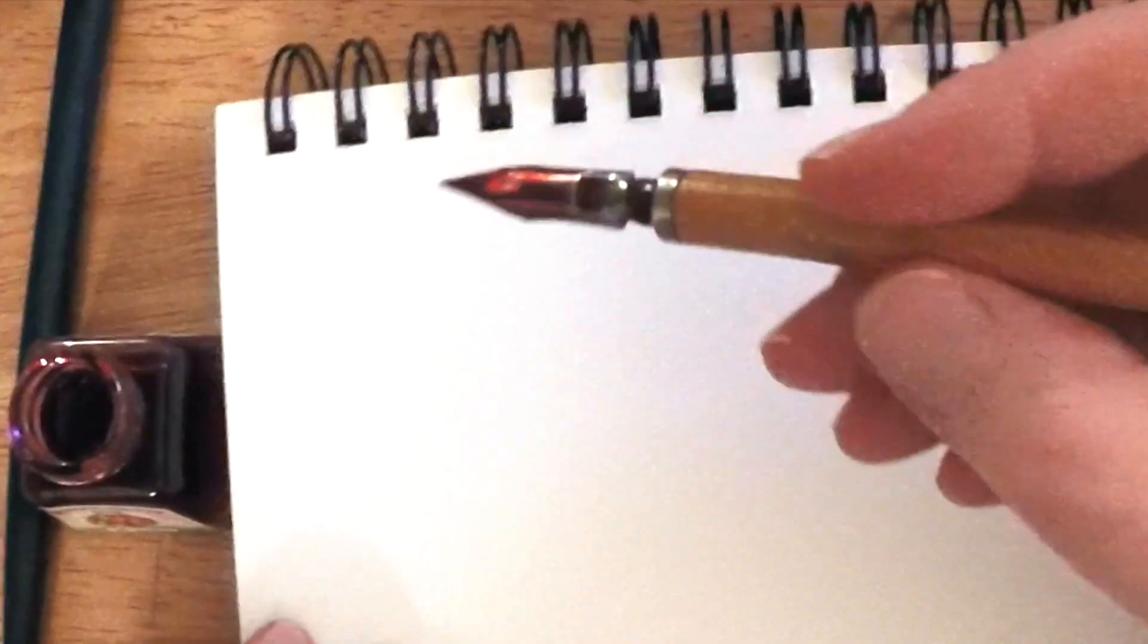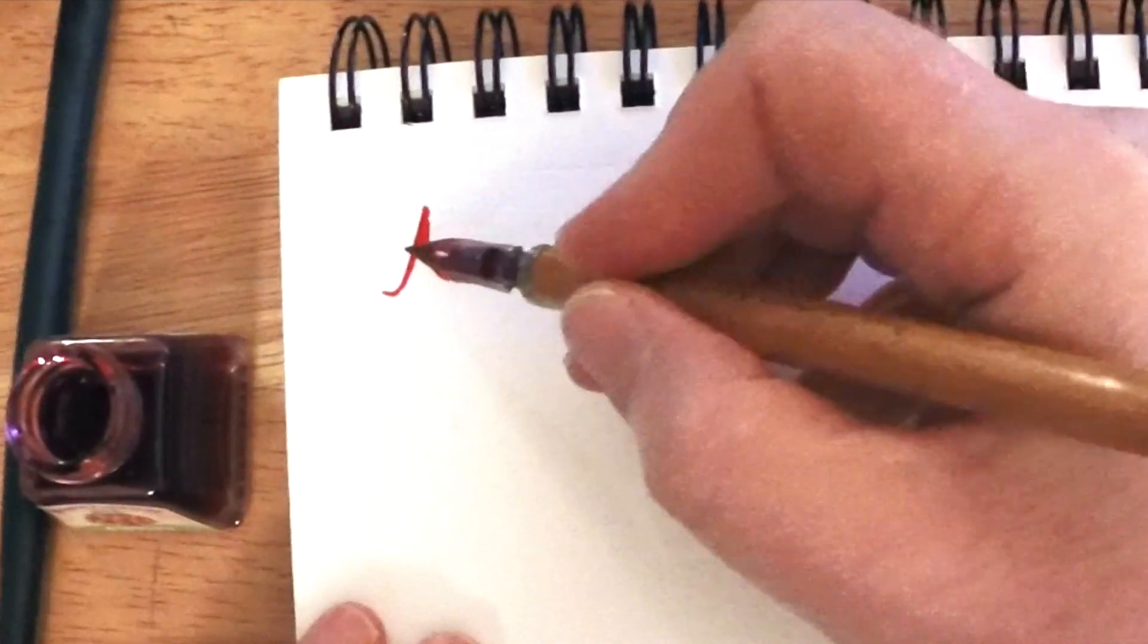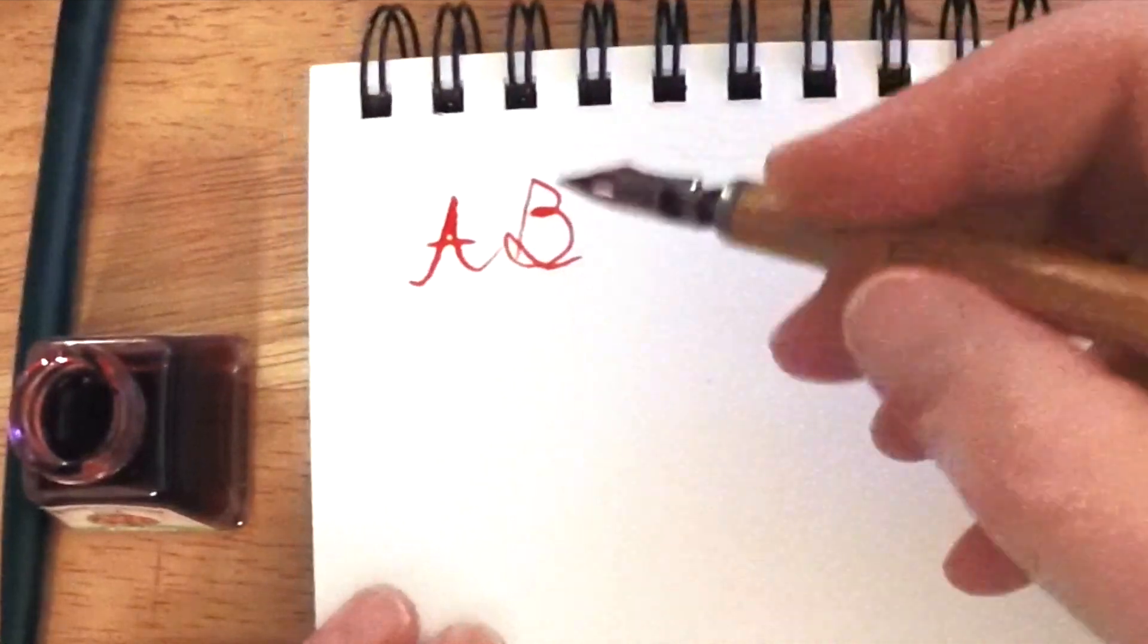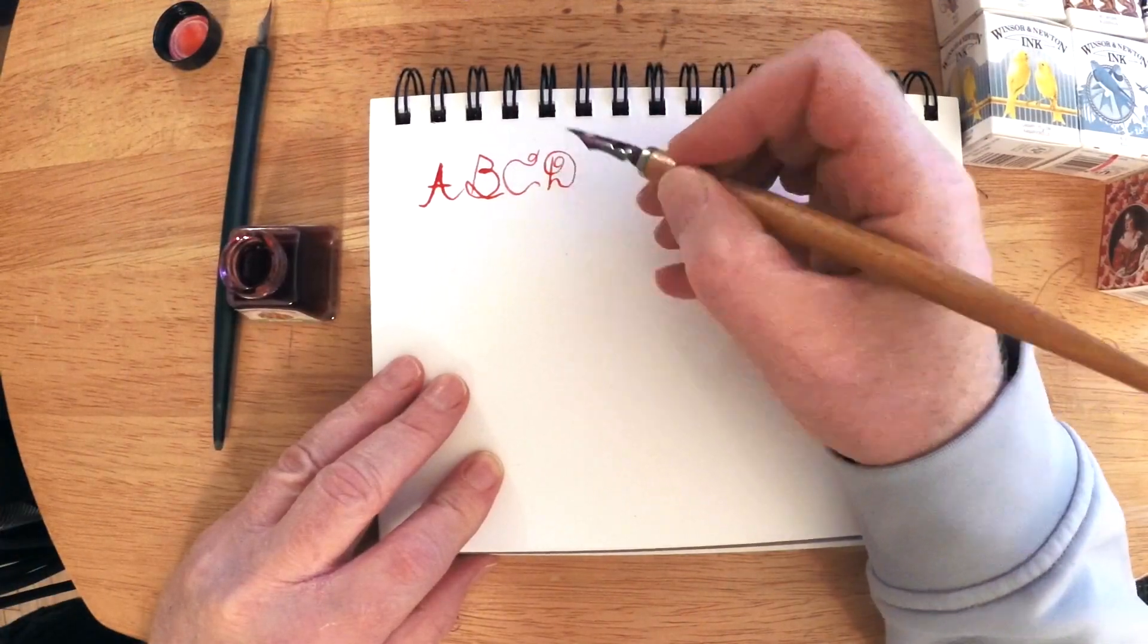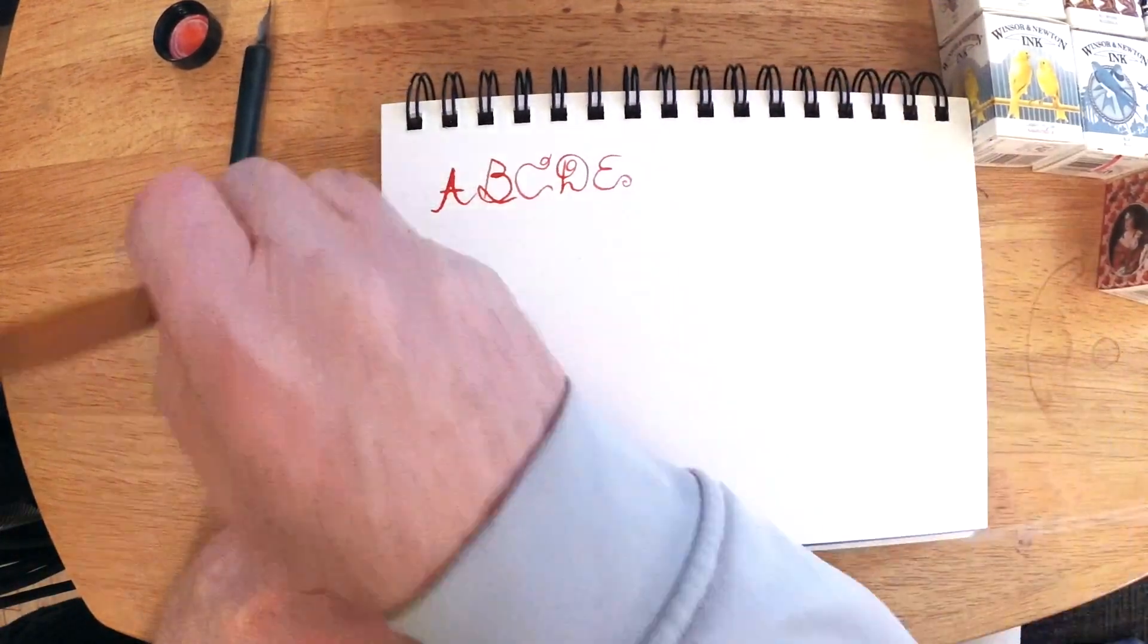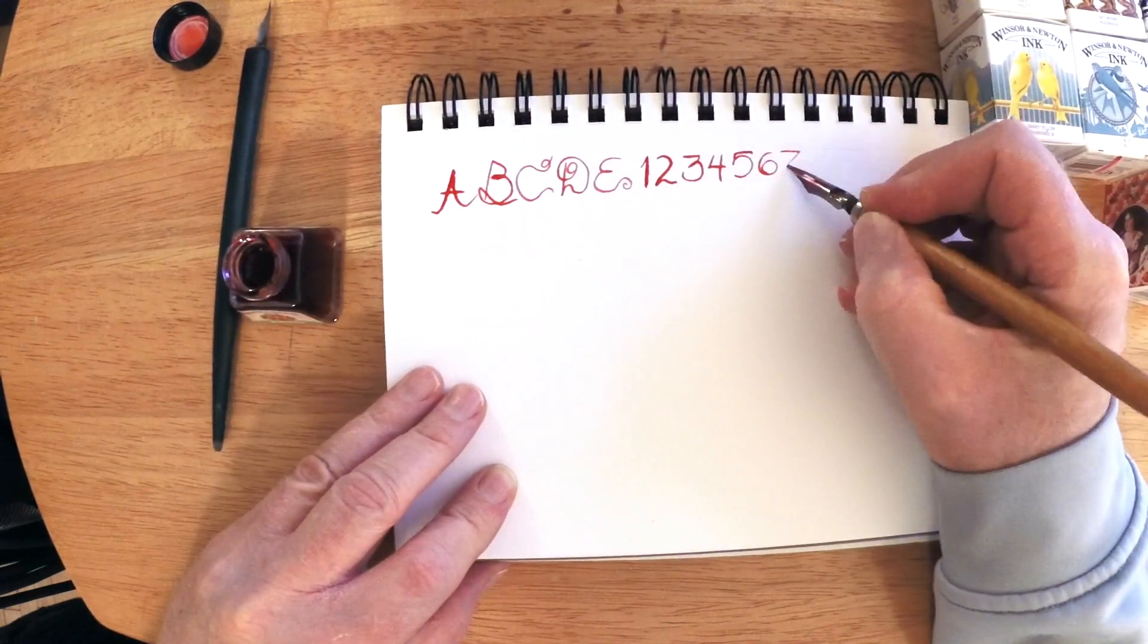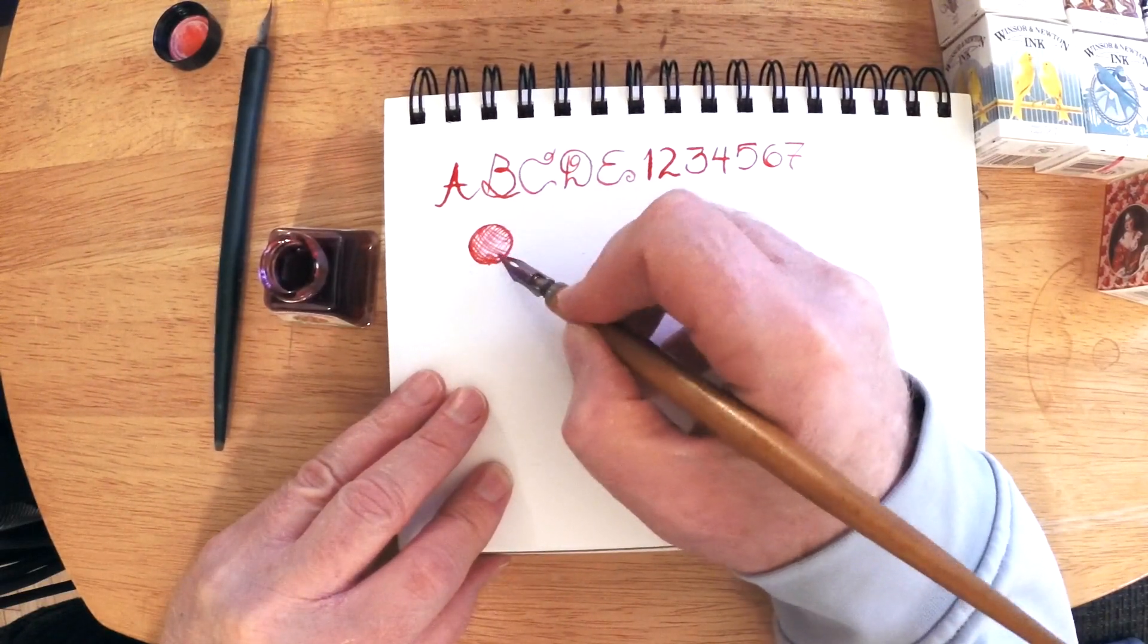So you just take the fountain pen, standard steel tip, dip it right into the ink, make sure you shake off any excess, and then just start writing. It's pretty simple and pretty easy, actually. And you'll start to notice the pen will have less ink in it, and then you just have to dip it again right into the ink.